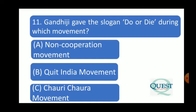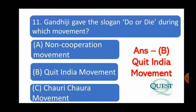Question number 11: During which movement did Gandhiji give the slogan 'Do or Die'? Kaun si aandolan ke dauran Gandhiji ne 'Karo ya Maro' ka naara diya tha? The answer is the Quit India Movement, known in Hindi as Bharat Chhodo Aandolan.